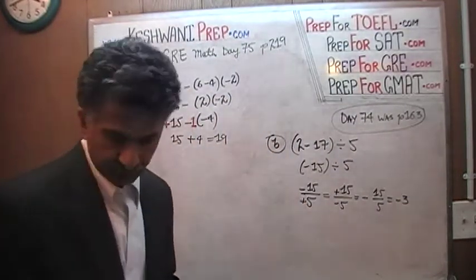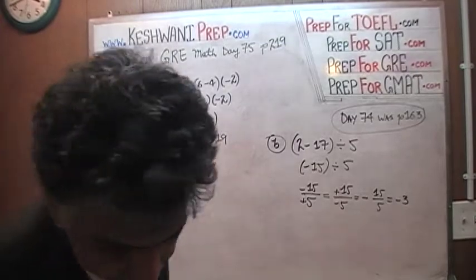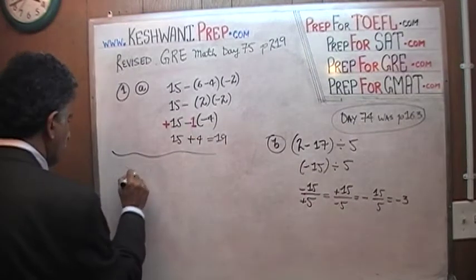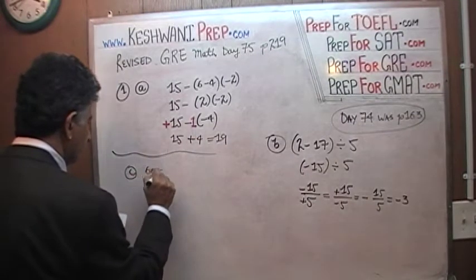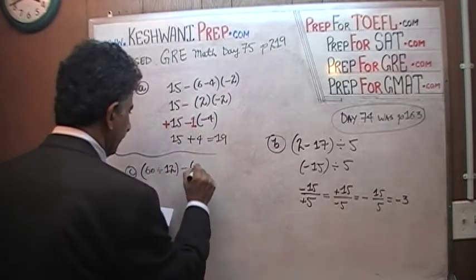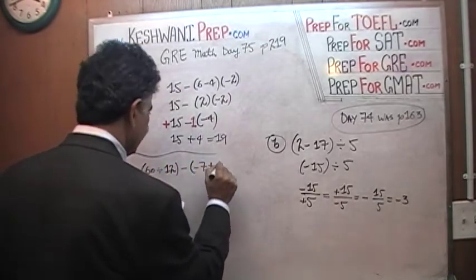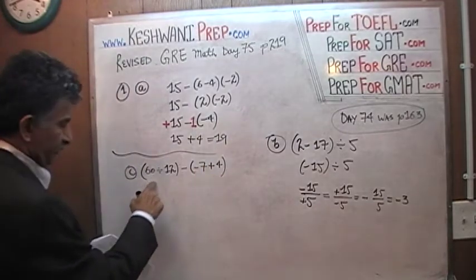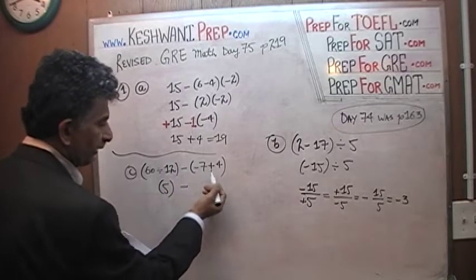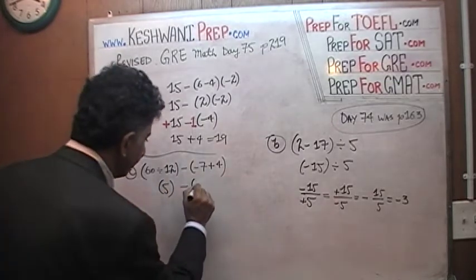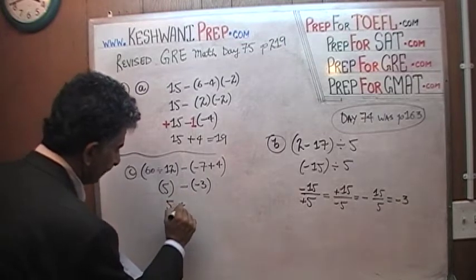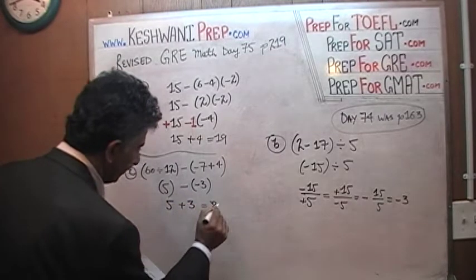Let's look at C. 60 divided by 12 minus a negative 7 plus a 4. We do the parenthesis first: 60 divided by 12 is just 5. Negative 7 and a positive 4 gives us negative 3. Then negative times negative is positive, so we have 5 plus 3, which gives us 8. That was C.